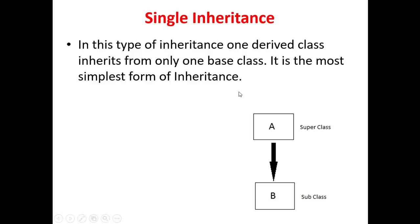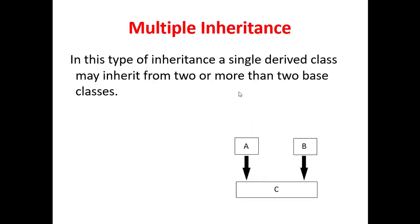Second is multiple inheritance. In this, you have more than one parent from which the child is derived. For example, class C is derived from both class A and class B. Whenever a derived class has more than one base class, such inheritance is called multiple inheritance.